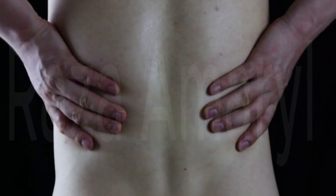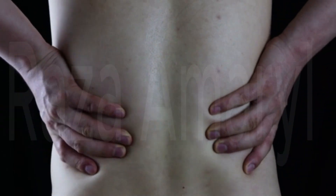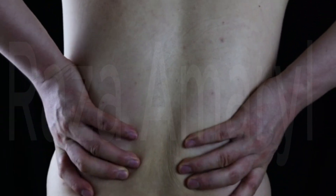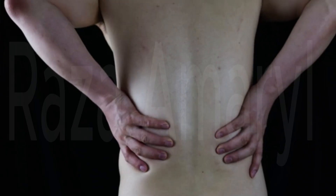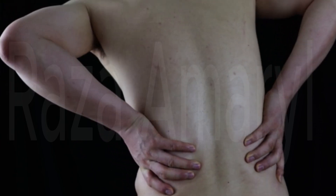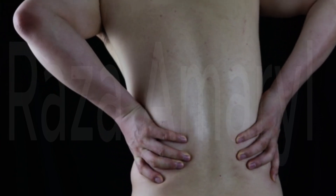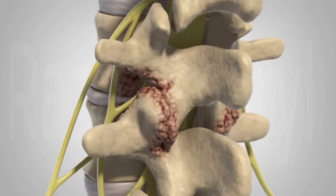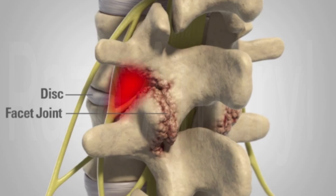A lumbar disc injury refers to damage or injury to one of the discs in the lower back, specifically in the lumbar region of the spine. The lumbar spine consists of five vertebrae, L1 to L5, and the discs act as shock absorbers between these vertebrae, providing cushioning and flexibility to the spine.